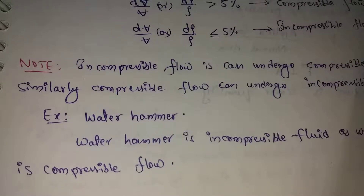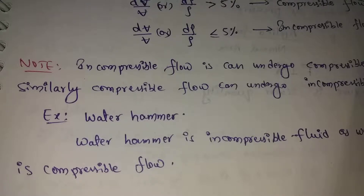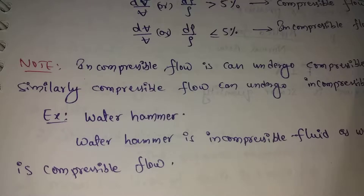To understand water hammer: consider a pipe or tap. When we close the tap suddenly, we create a pressure surge, resulting in compressible flow behavior. If the pipe material is weak or elastic, the water hammer force can damage the pipe. So here, water is normally incompressible, but under this sudden closure the water gets compressed and the flow becomes compressible.